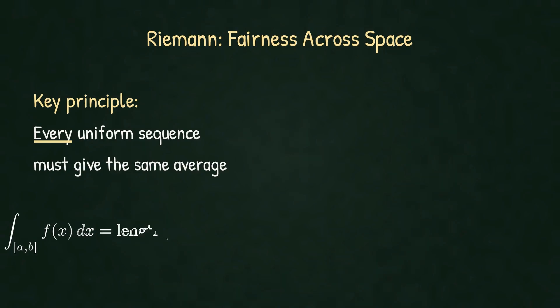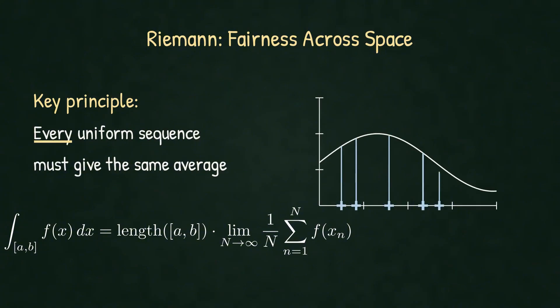In one dimension, we have the familiar formula. The integral of f over the interval [a,b] equals the length of the interval times the limit of the average. Take any uniform sequence on the interval, evaluate the function at each point, and compute the average. Every uniform sequence should converge to the same value.